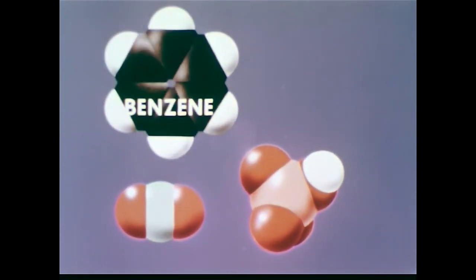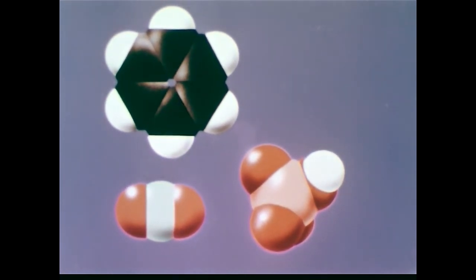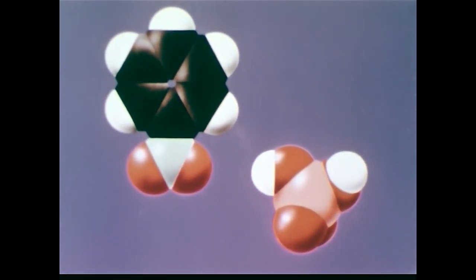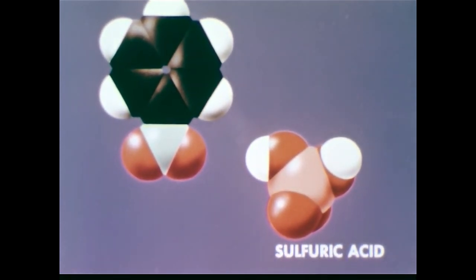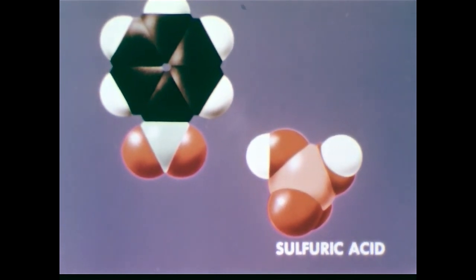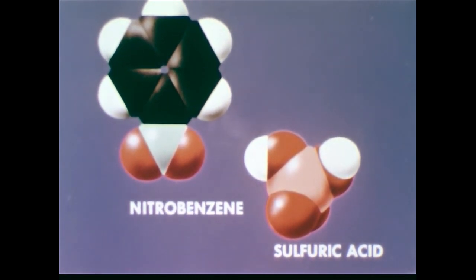The third reactant, benzene, consists of a ring of six carbons, each bonded to a hydrogen atom. When a nitronium ion and a benzene collide, a proton transfers to a hydrogen sulfate ion — this regenerates sulfuric acid. The sulfuric acid is a catalyst in this reaction. The product, nitrobenzene, is used to make dyes and other organic compounds.